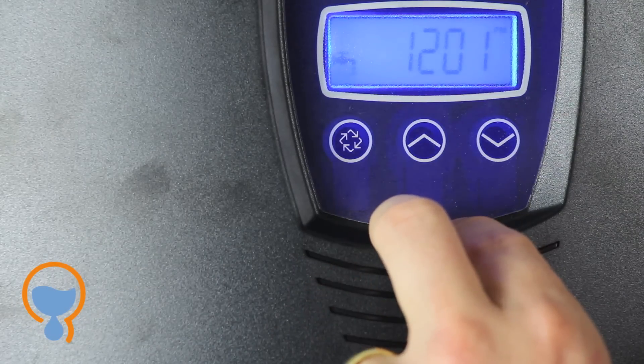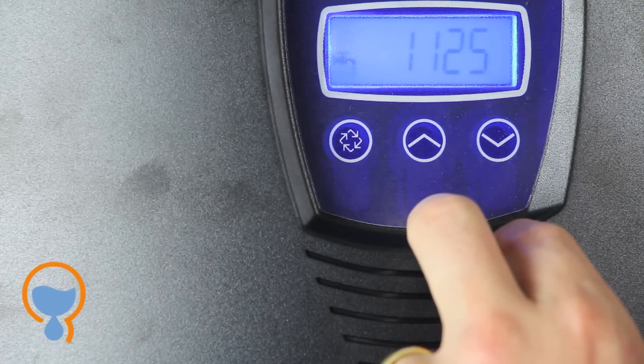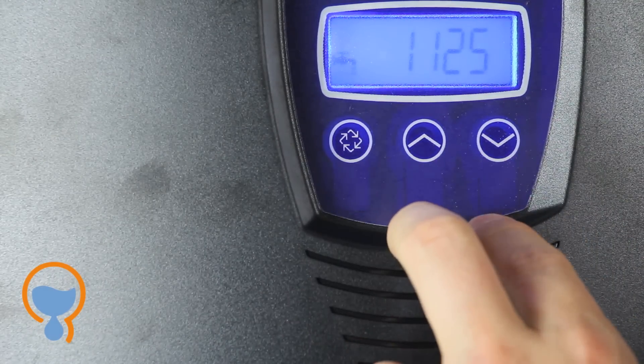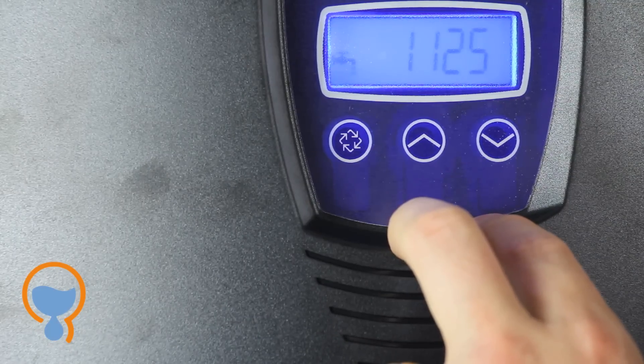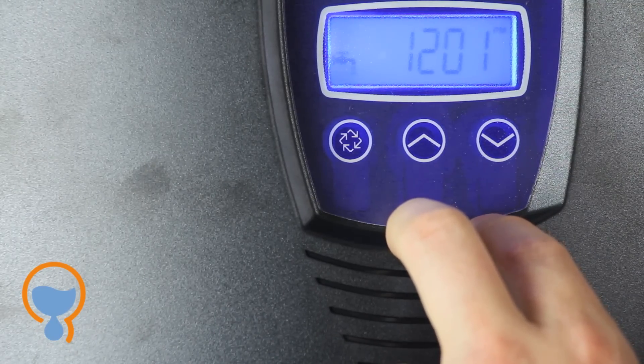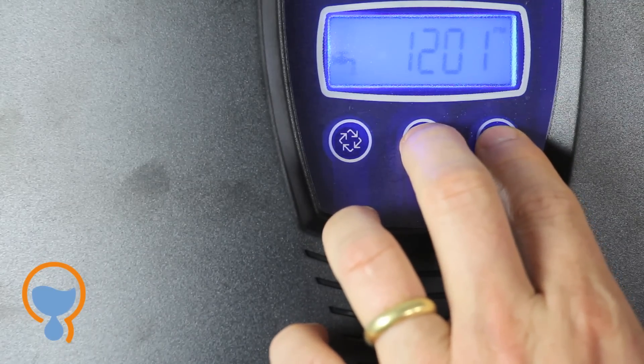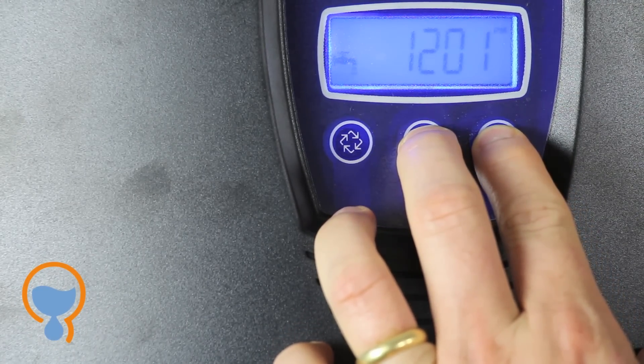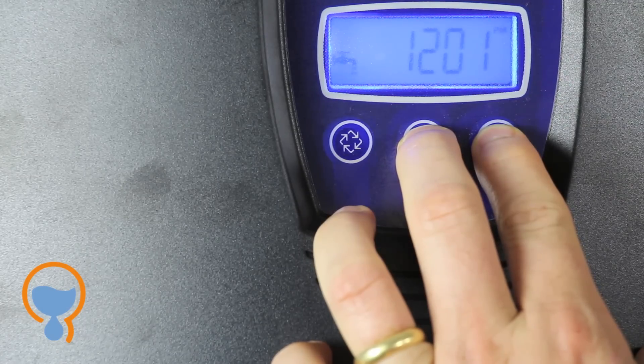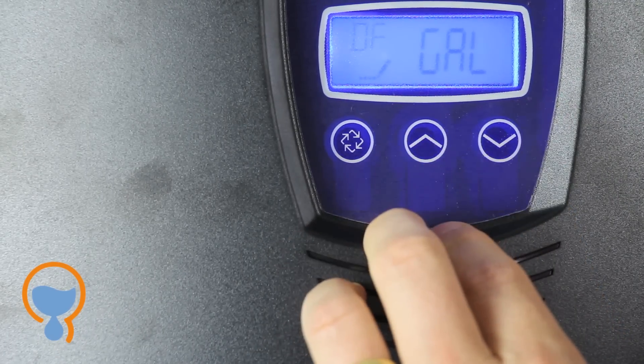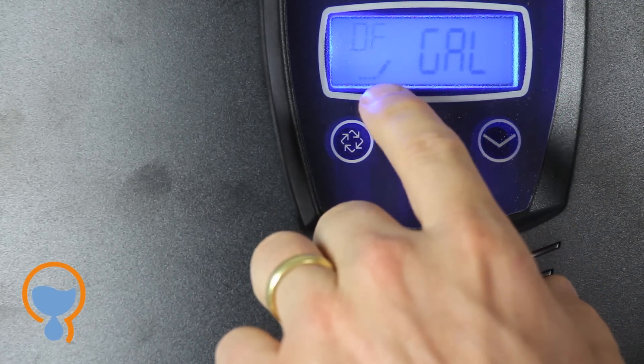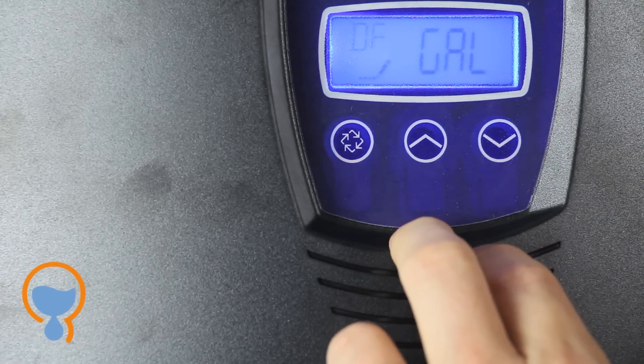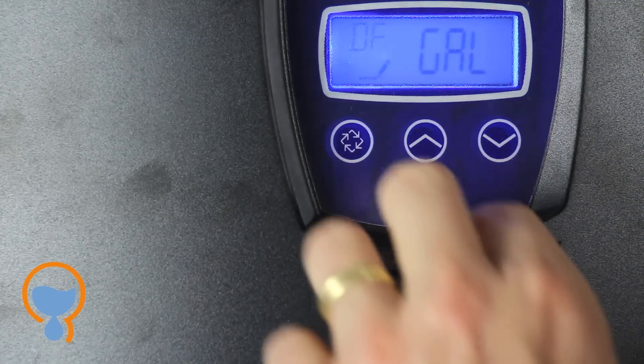Now the time is set at 12:01 PM and it flip flops between the time and the number of gallons remaining before the next regeneration. So we're going to press and hold the up and the down arrow at the same time and hold them down until we enter the programming mode. You know you're in the programming mode because you get this little pencil icon here and you get a code in the upper left hand corner.